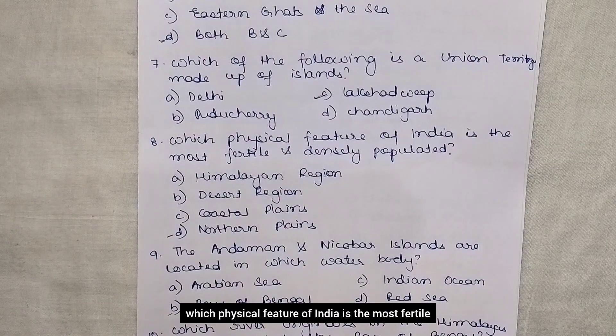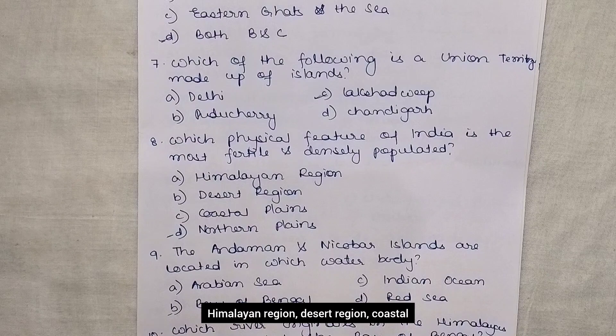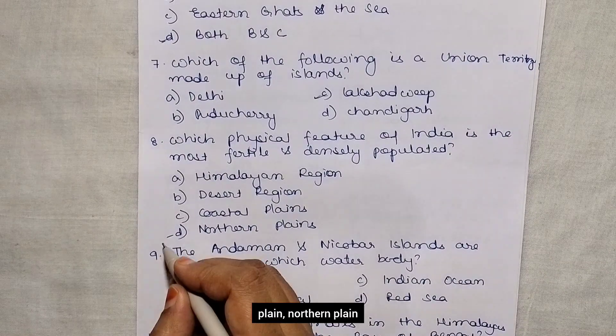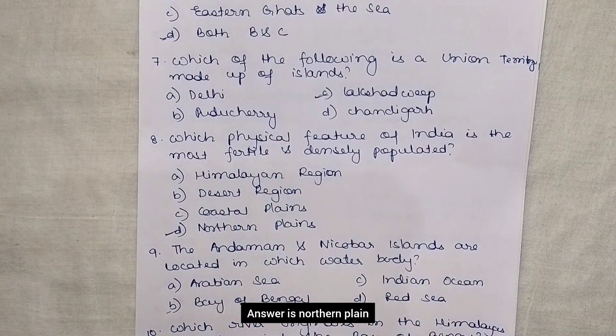Which physical feature of India is the most fertile and densely populated? The options are Himalayan region, desert region, coastal plain, and northern plain. Answer is northern plain.